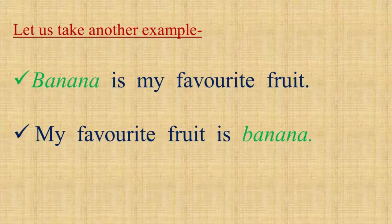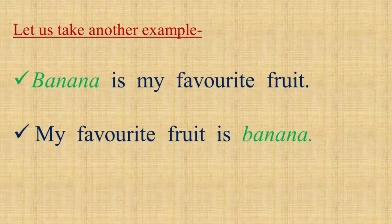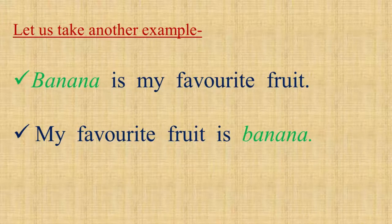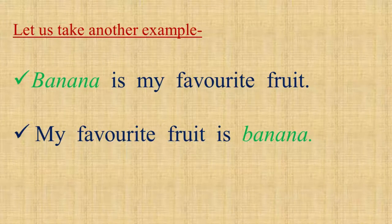Please pay attention to these two sentences and repeat after me. 'Banana is my favorite fruit.' 'My favorite fruit is banana.' We see that the same meaning is conveyed in both sentences. The same word 'banana' is the subject in the first sentence and predicate in the second sentence. So, we can say that the same word can be a subject or a predicate in different situations or sentences.